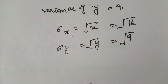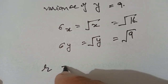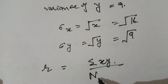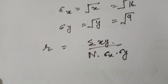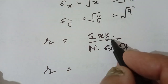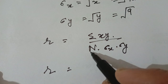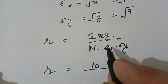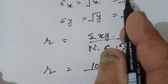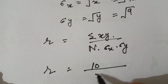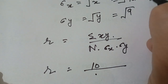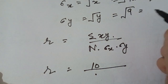Now, the coefficient of correlation formula is: r equals summation xy over n, divided by standard deviation x into standard deviation y. The values given are: covariance (summation xy over n) is 10, standard deviation x is under root 16, which equals 4, and standard deviation y is under root 9, which equals 3.